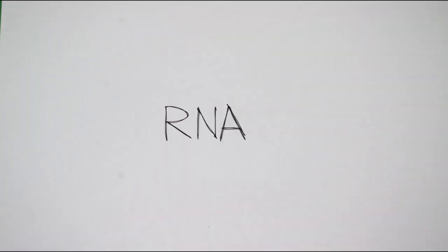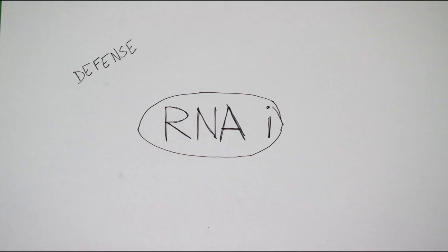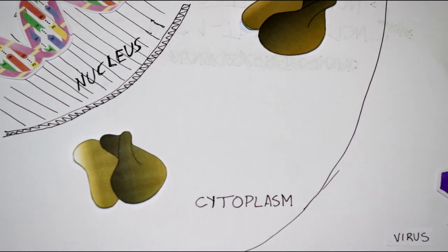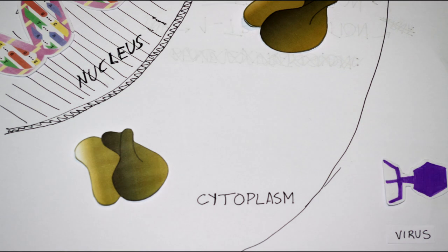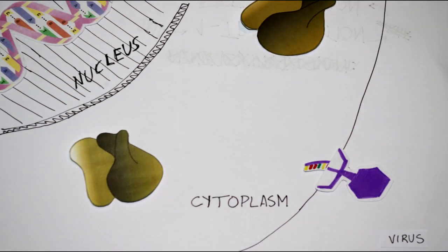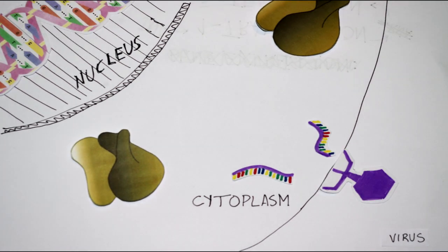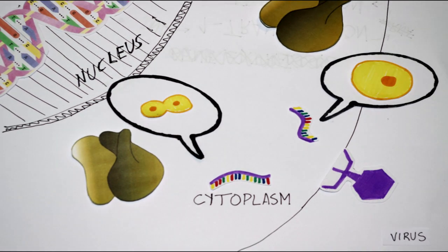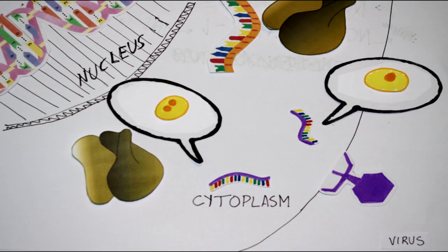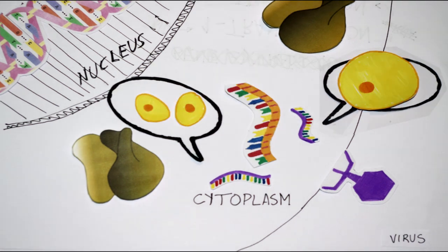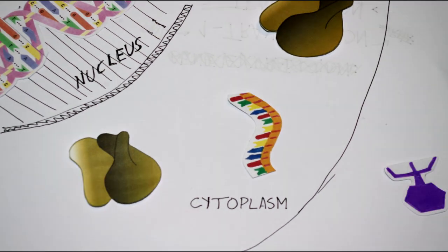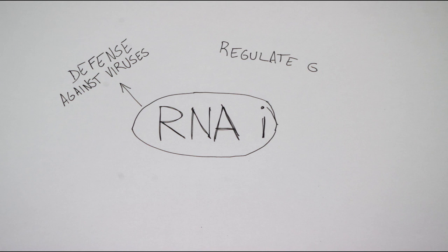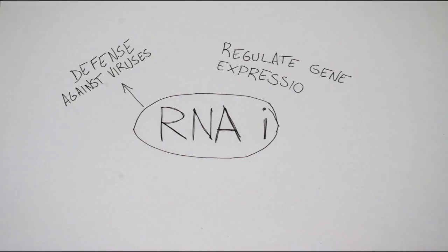This mechanism acts as a defense weapon against viral infections. As some types of viruses attack organisms by injecting their genetic material into their cells, giving the wrong instructions, siRNA can be used to eliminate these instructions. It's also important for regulating gene expression.